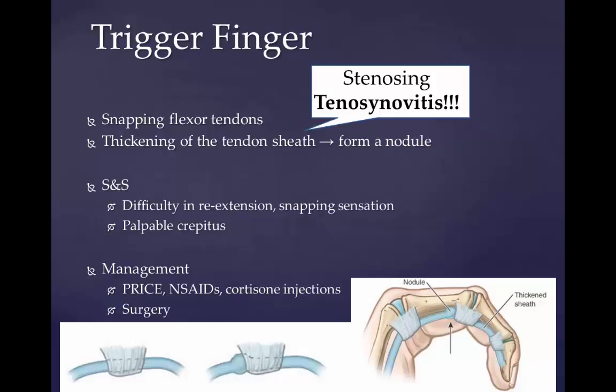Trigger finger, trigger thumb, or trigger digit is a common disorder characterized by catching, snapping, or locking of the involved finger flexor tendon associated with dysfunction and pain. A disparity in size between the flexor tendon and the surrounding retinacular pulley system, most commonly at the level of the first annular pulley, results in difficulty flexing and extending the finger. The label 'trigger finger' is used because when the finger unlocks, it pops suddenly as if releasing a trigger on a gun. Corticosteroid injection of the tendon sheath is effective in more than half of patients; when this fails, a simple surgical procedure to cut the restricting sheath resolves the problem.